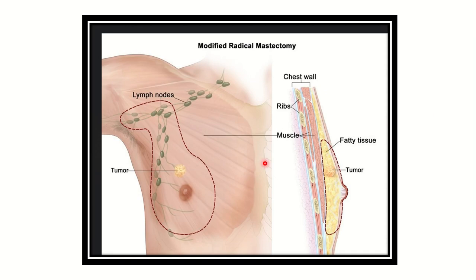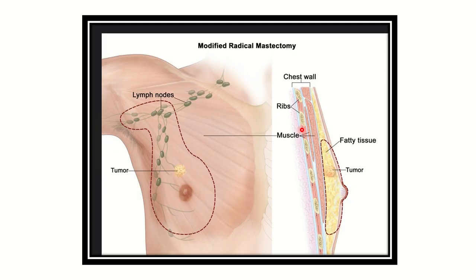Here we can see the breast with a tumor, and we can see the breast drains to different types of lymph nodes present around the axilla. In the second picture, we can also see the breast tissue with a tumor, and some other structures on which the breast tissue is located, such as the group of muscles and fascia.